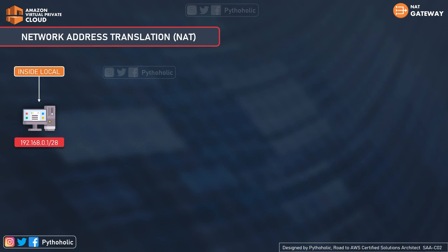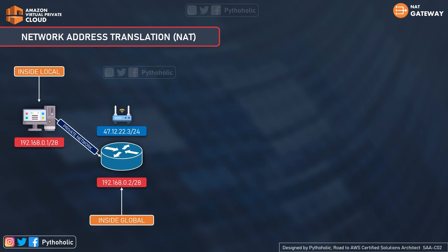Let's walk through an example. We are at home using a desktop computer and want to access the internet. Our local IP block is 192.168.0.1/28 — that's our inside local address, not provided by the service provider but our own local IP accessible within the local network. We send the request to the NAT device. We also have an inside global address — an IP representative for one or more local IPs, called IP masquerading — which can be an IP from the block 47.12.22.3, and with that public IP we connect to the internet.